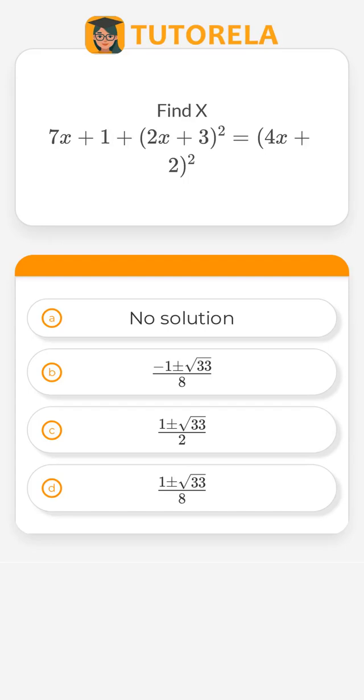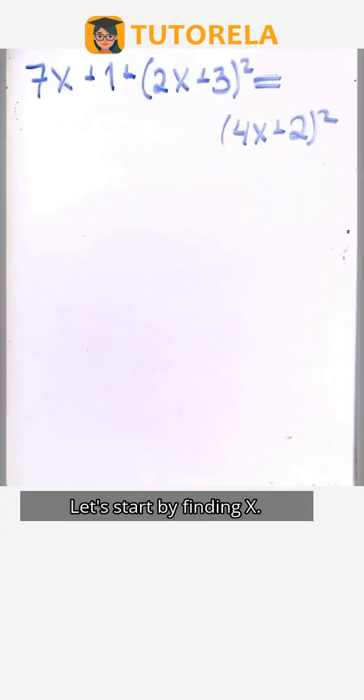Find x. 7x plus 1 plus the quantity 2x plus 3 squared equals the quantity 4x plus 2 squared. Let's start by finding x.